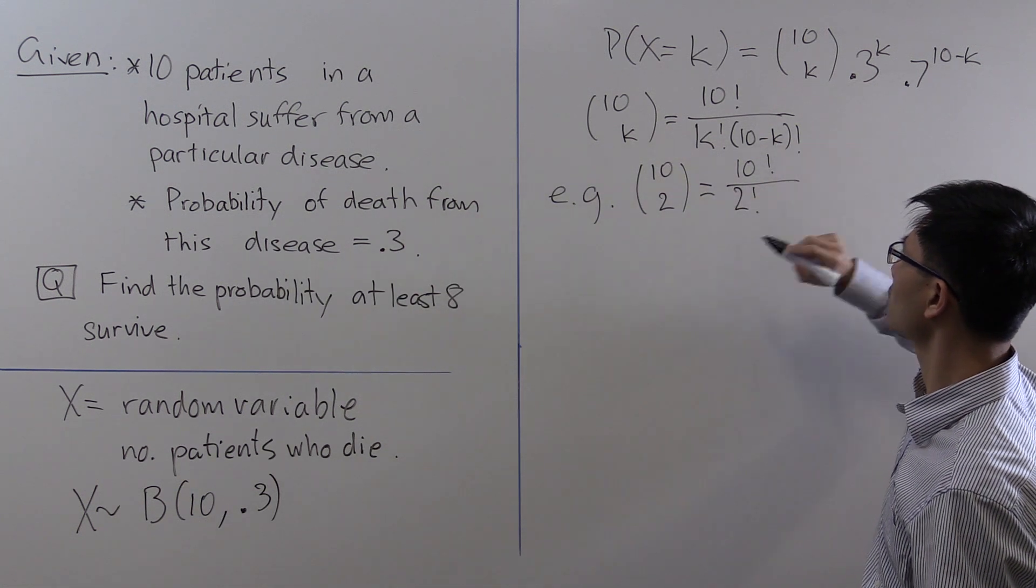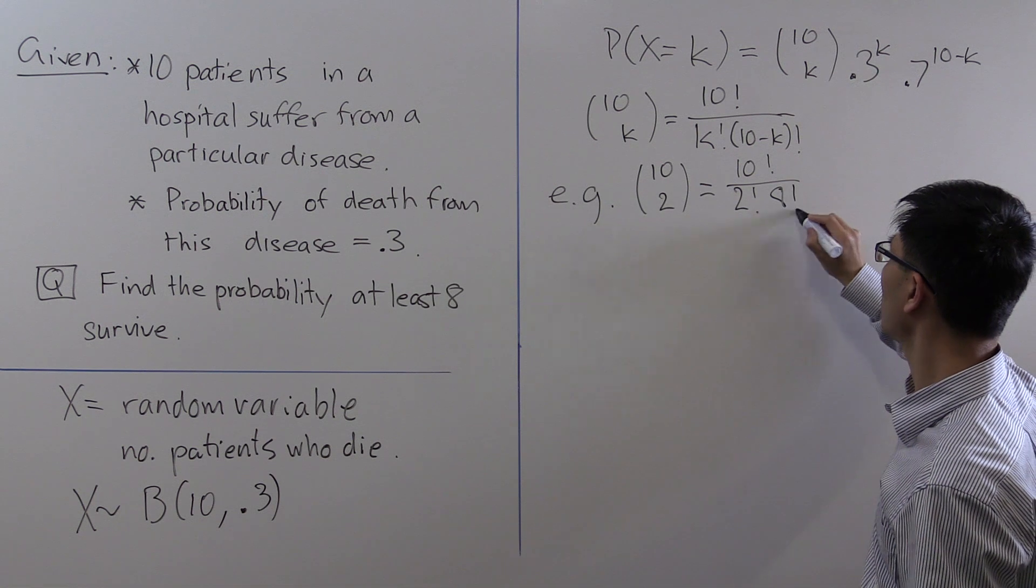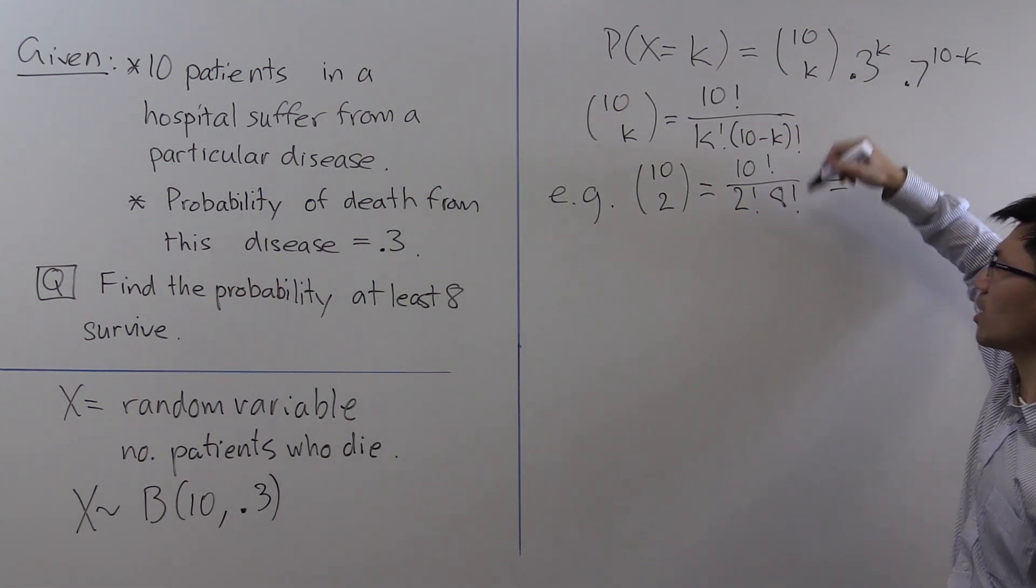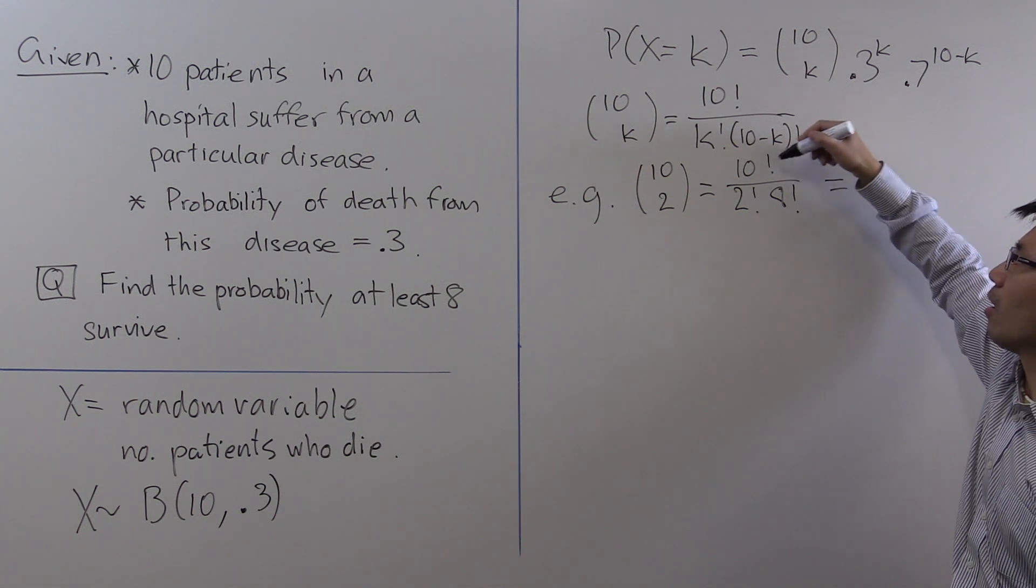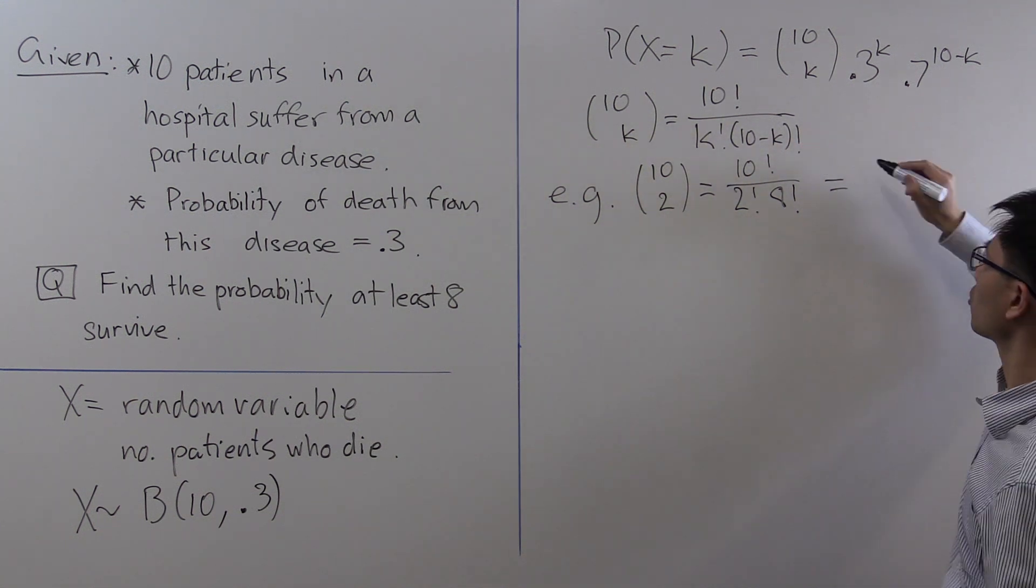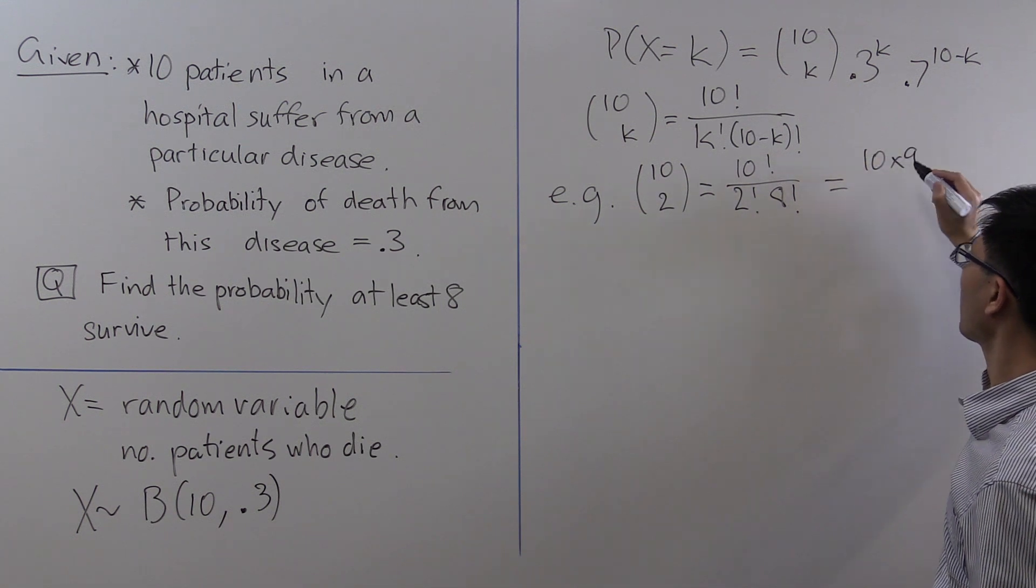Remember the best way to calculate this is to cancel the 8 factorial in the denominator with the last 8 factors in the numerator to get you just 2 of those factors. So that's 10 times 9 divided by 2 times 1.